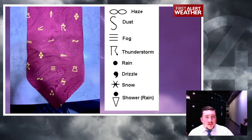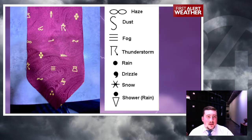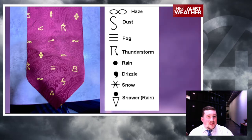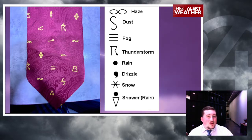The S represents dust, and there are variations of each of these. That curly S with two lines through it signifies a severe dust storm. You have fog, which is the three lines. If it's just two lines, then it's mist. We get a lot of that around here, especially if you're up early in the morning — you'll see a lot of weather stations reporting either fog or mist.